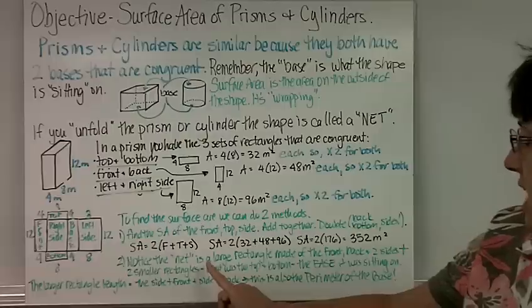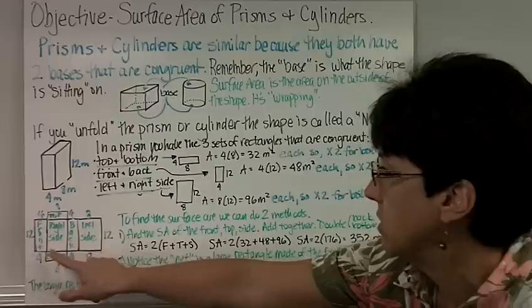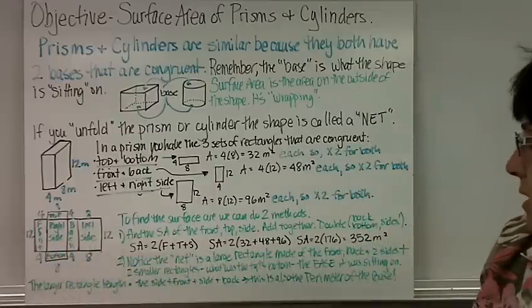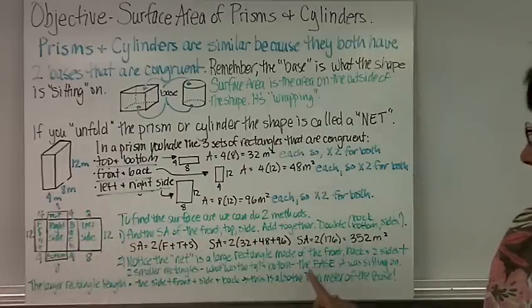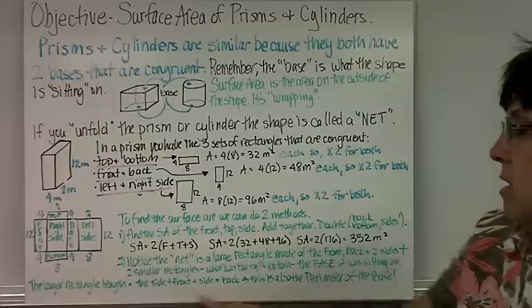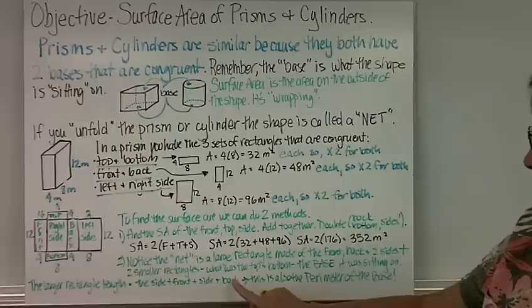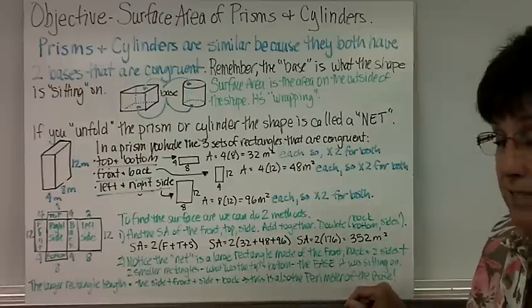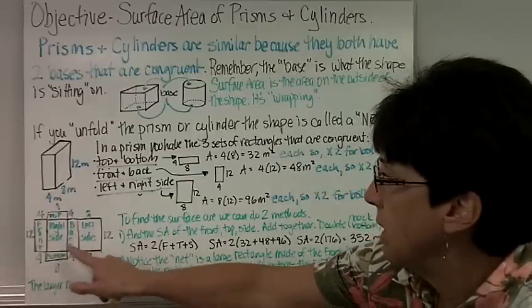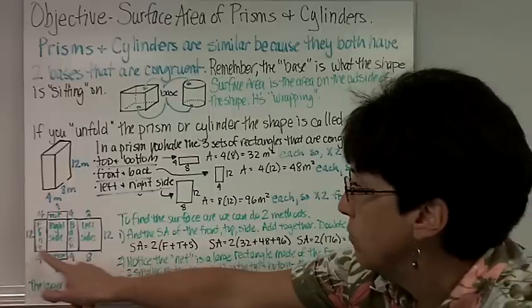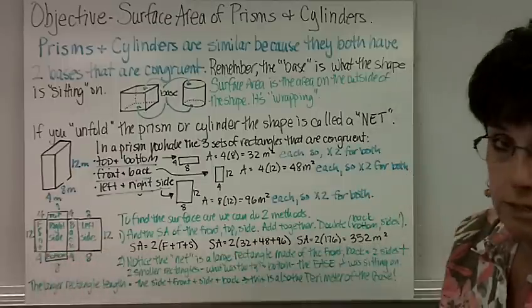Notice the net is a large rectangle made of the front, the right side, the back, and the left side, with two smaller rectangles for the top and bottom — the base it was sitting on. The length of that larger rectangle — the side, the front, the side, and the back — is also the perimeter of the base. If you wrap it back around, those side measurements 4, 8, 4, 8 match the perimeter of the base.